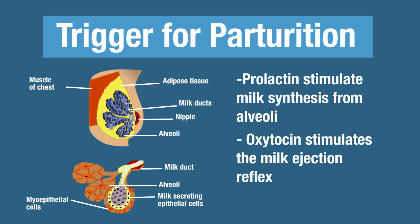You've got to get the milk out of the lumen of the alveoli and ejected. Oxytocin stimulates the milk ejection reflex by stimulating myoepithelial cells. Myo means muscle, so these are epithelial cells associated with muscle, and that can cause ejection of the milk.